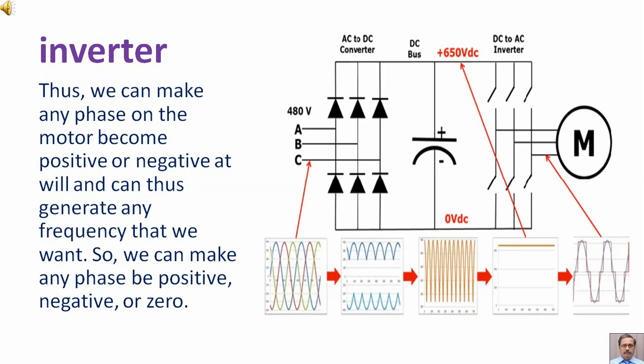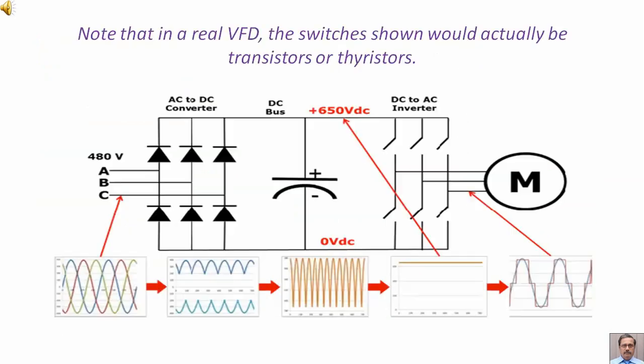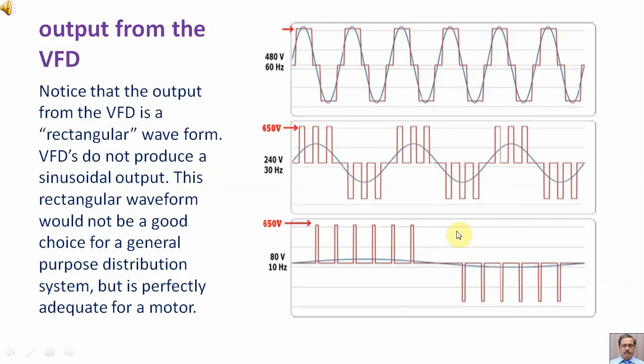Thus we can make any phase on the motor become positive or negative at will and can thus generate any frequency that we want. So we can make any phase be positive, negative, or zero. Note that in a real VFD, the switches shown would actually be transistors or thyristors. The output from the VFD is a rectangular waveform. VFDs do not produce a sinusoidal output. This rectangular waveform would not be a good choice for a general purpose distribution system but is perfectly adequate for a motor.